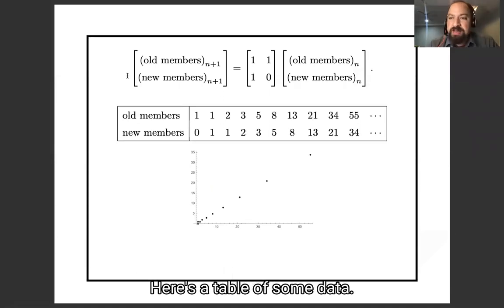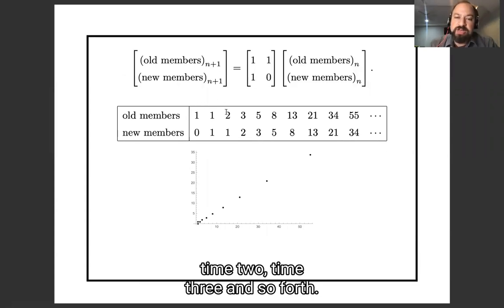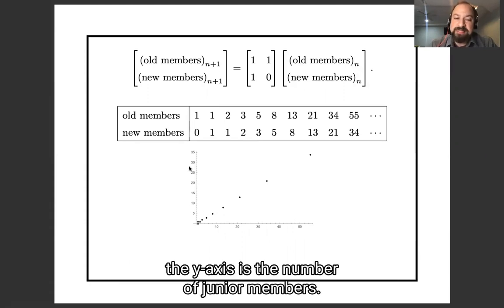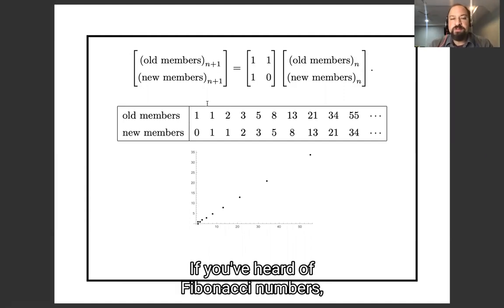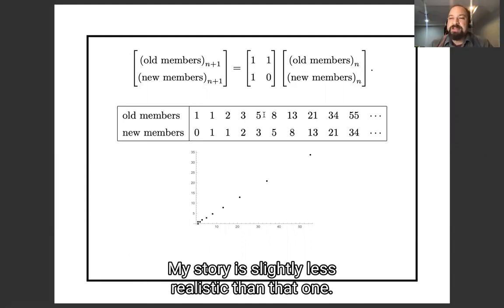Here's a table of some data showing how the size of the club grows at time one, time two, time three, and so forth. And here it is plotted. The x axis is the number of senior members. The y axis is the number of junior members. If you've heard of Fibonacci numbers, these are the Fibonacci numbers. Fibonacci introduced them with a story about rabbits breeding. My story is slightly less unrealistic than that one.